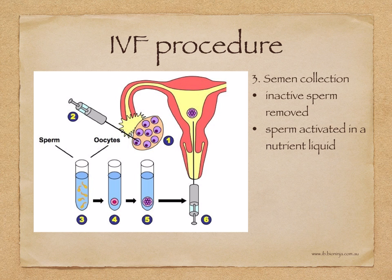Step 3 is semen collection, which is collected from the man. Inactive sperm is removed in a process called sperm washing. The sperm are then placed in a nutrient liquid to ensure that they are active.